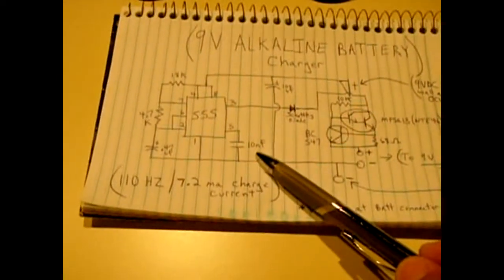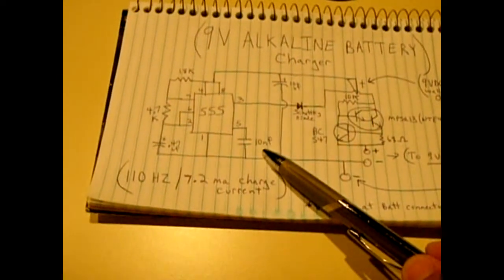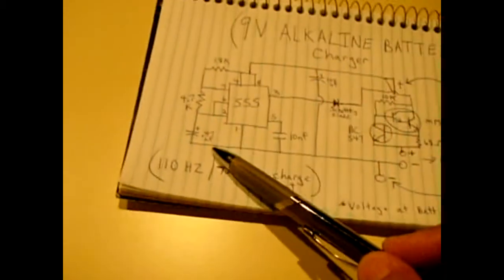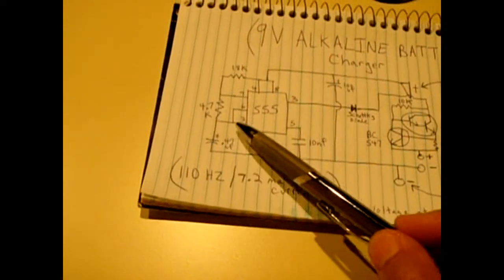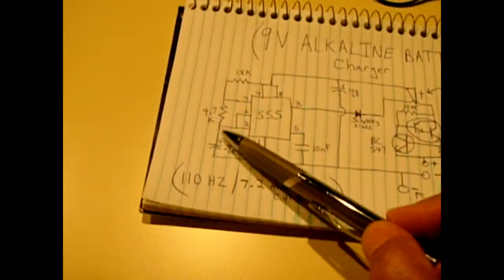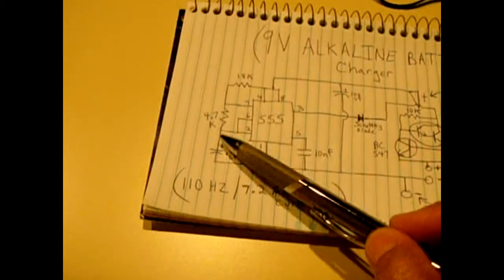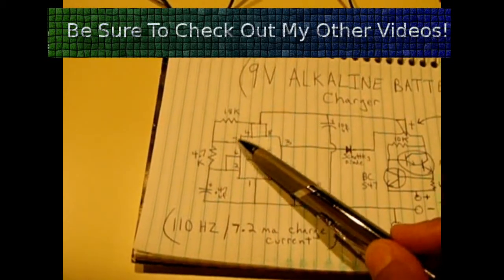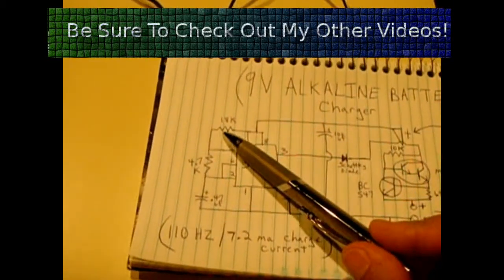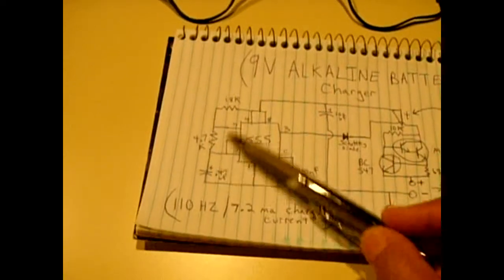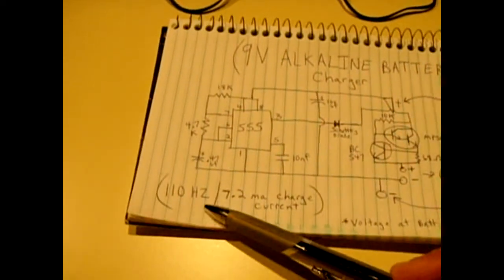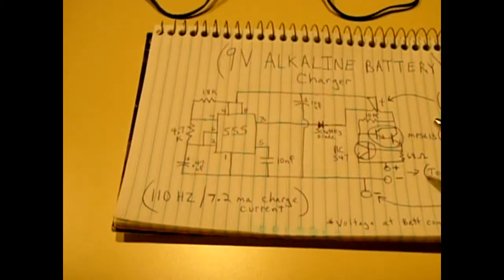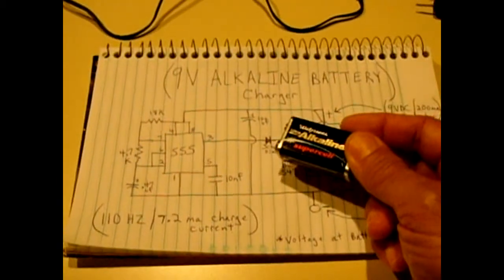You have a 10 nanofarad which is a 103 cap or a 0.01 microfarad, a 0.47 microfarad from pin two to ground. Between pin six and seven you have a 4.7 K resistor, between seven and the rail you have an 18K. These three together create the 110 Hertz pulses that are exiting pin three.